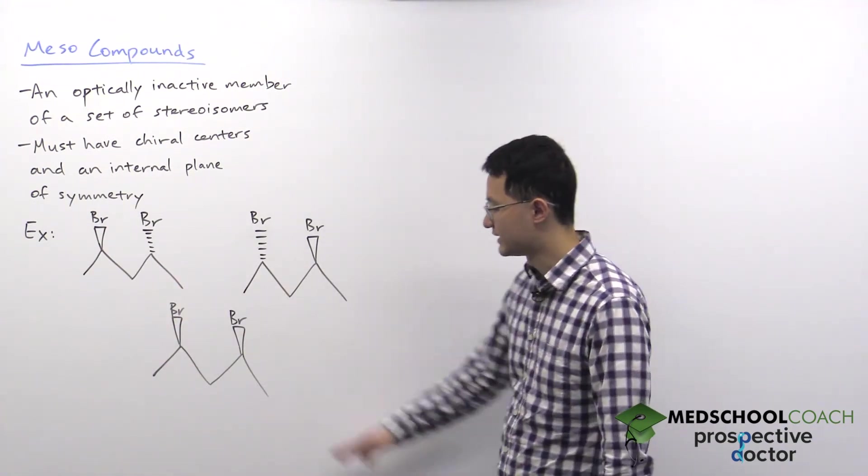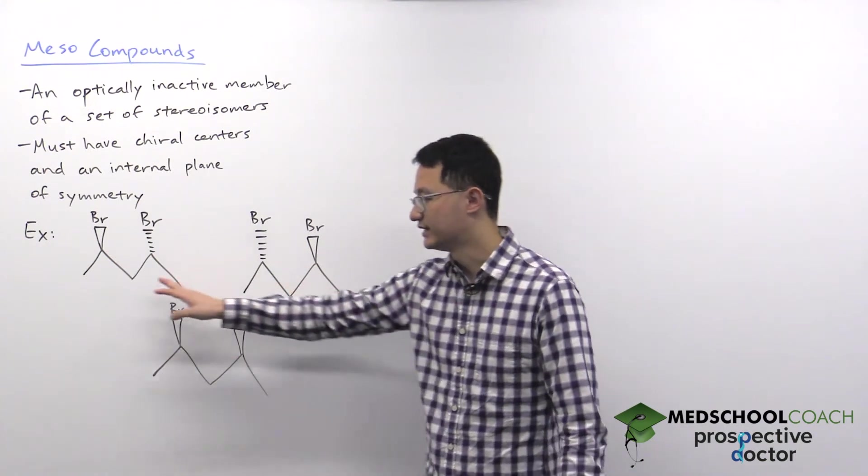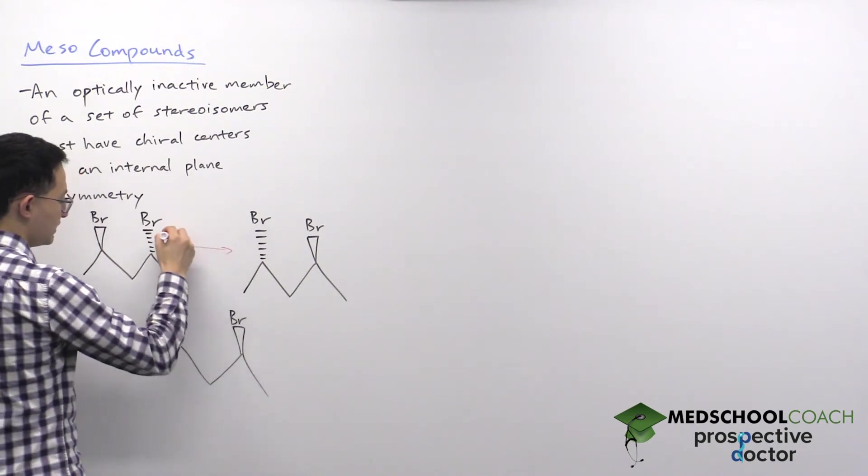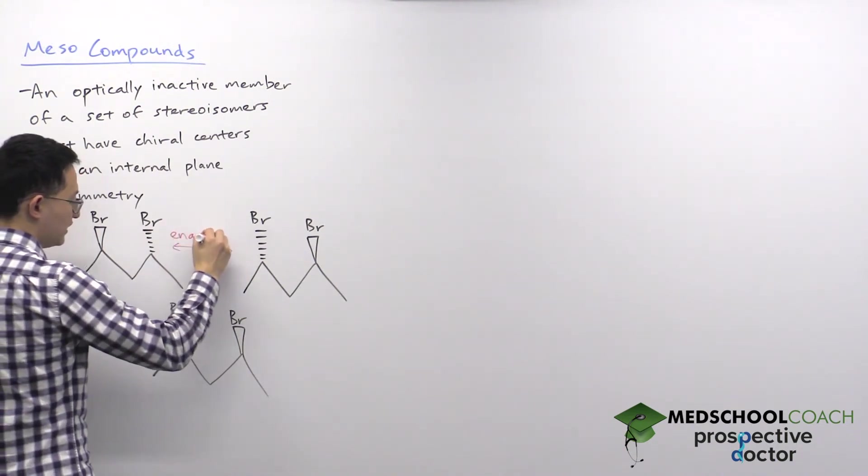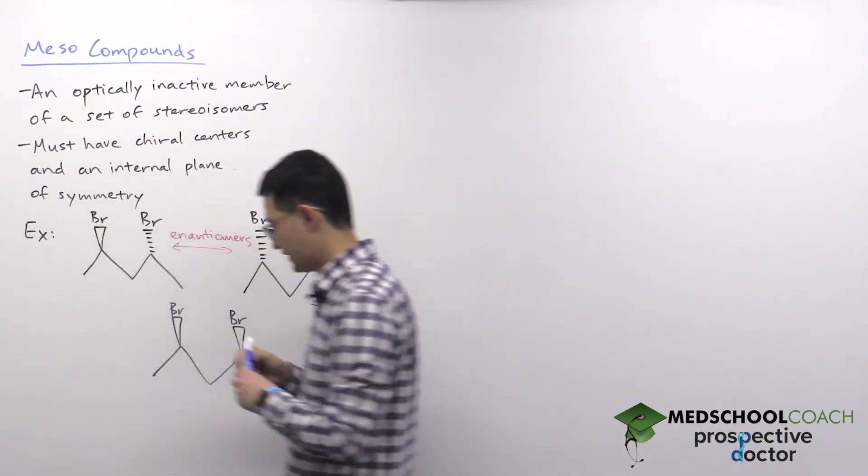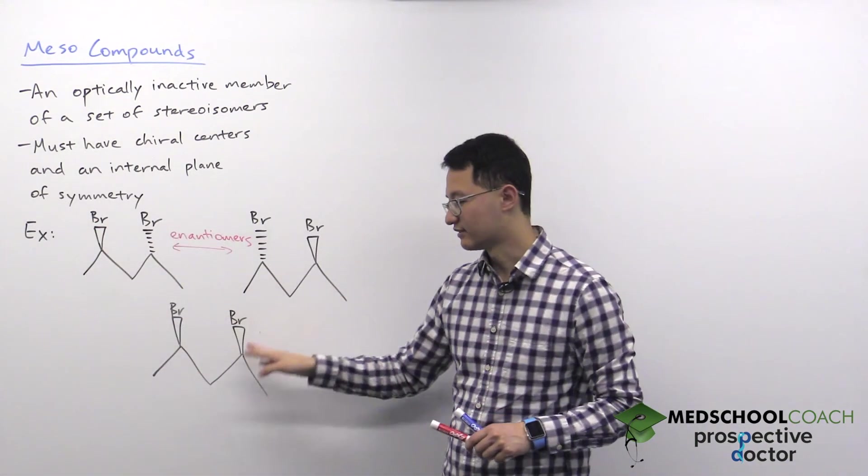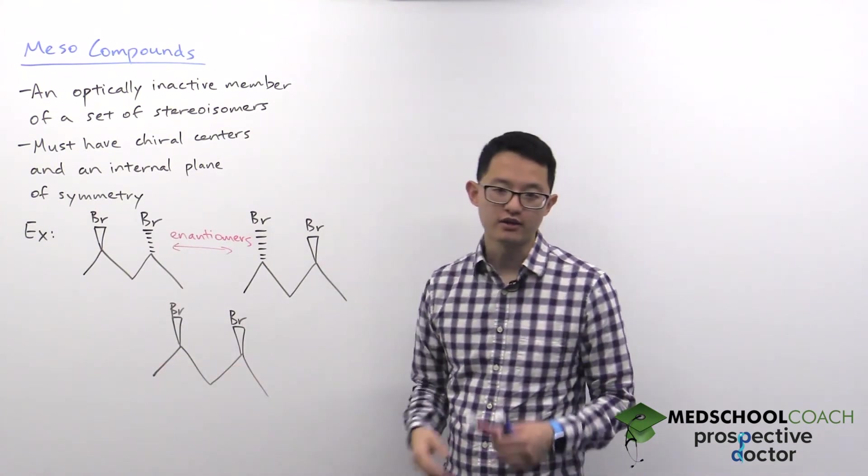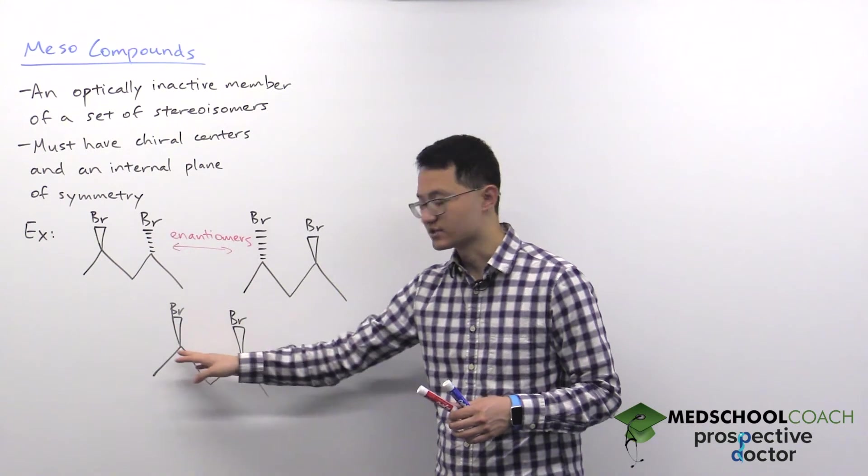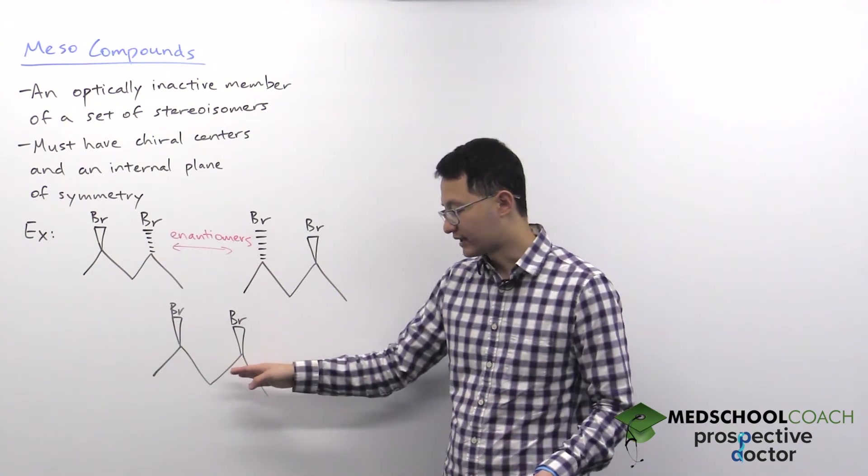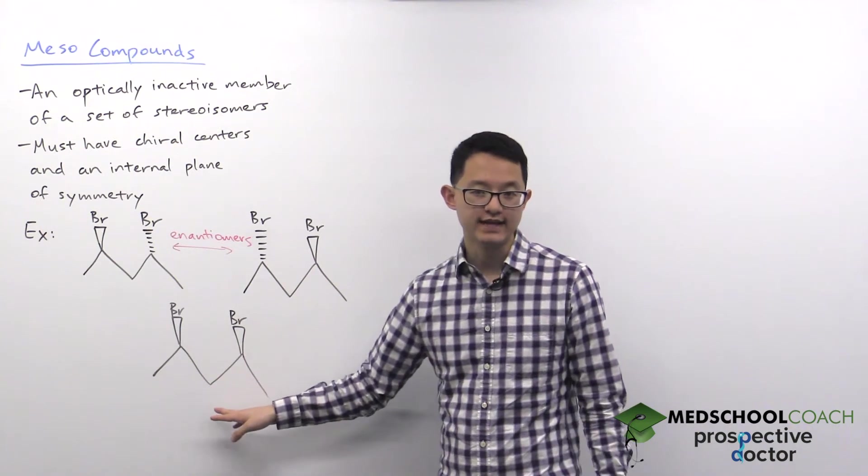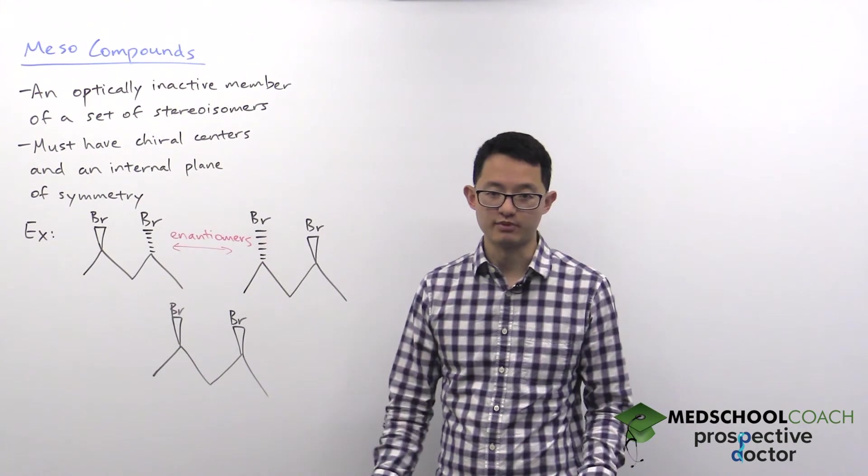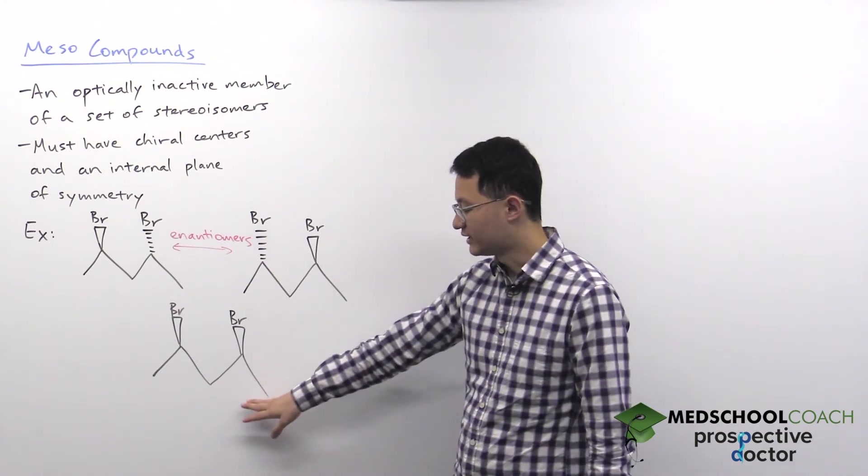The reason why there's only three is because these two, you can see, they are mirror images of each other. These two are enantiomers. If you look at this molecule on the bottom, it certainly is different because instead of one wedge and one dash, it has two wedges. If you were to try to draw another molecule that has dashes at both of the bromines, then you would recognize that if you flip the molecule it would be identical to this one right here. So that's why we don't have four stereoisomers, because you get one identical compound.